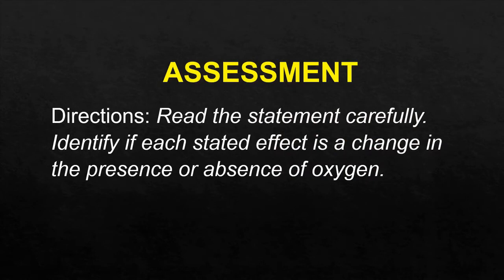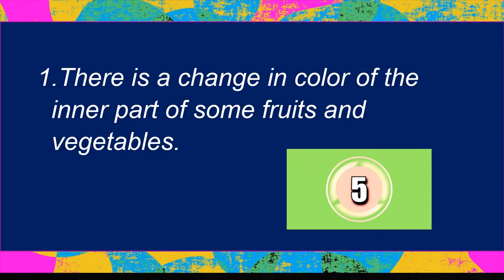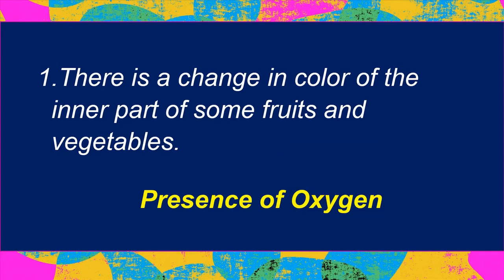Now let us see if you understood our lesson. Read the statement carefully and identify if each stated effect is a change in the presence or absence of oxygen. Statement 1: There is a change in color of the inner part of some fruits and vegetables. The answer is: presence of oxygen.